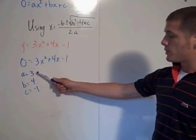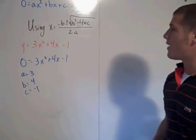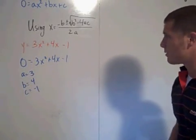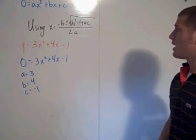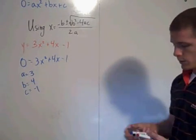So then you just substitute your a, b, and c values into the quadratic formula: negative b plus or minus the square root of b squared minus 4ac all over 2a equal to x.